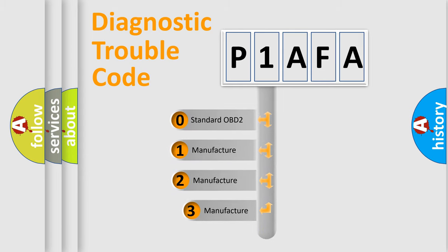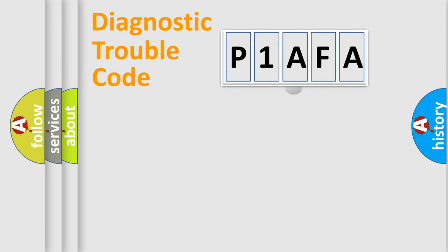If the second character is expressed as zero, it is a standardized error. In the case of numbers 1, 2, 3, it is a more precise expression of the car-specific error.